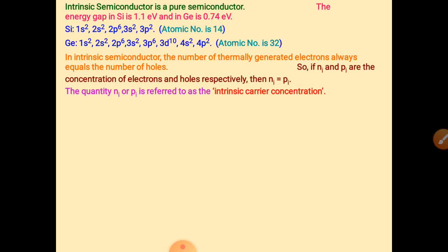From their electronic configurations, the outermost shell vacancy is 4 in silicon (3p2, valence 4) and 4 in germanium (4p2, valence 4). In intrinsic semiconductors, thermally generated electrons always equal the number of holes — for every electron freed, one hole is created. We write ni equals pi, where ni is electron concentration and pi is hole concentration. These are called intrinsic carrier concentrations.